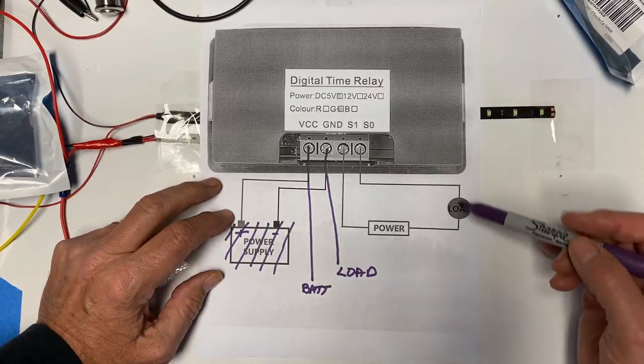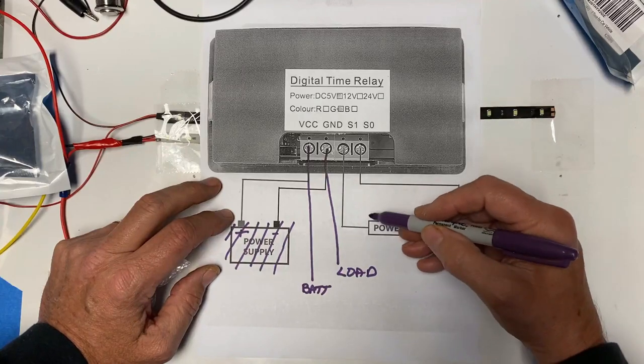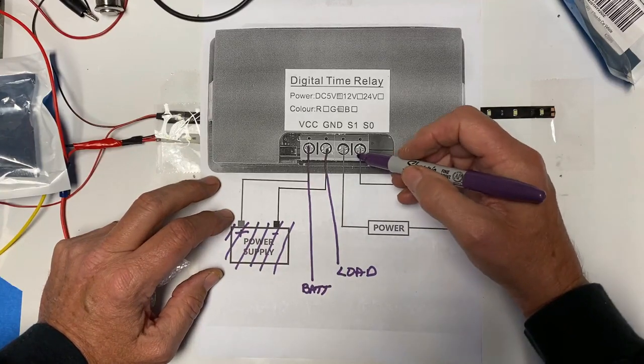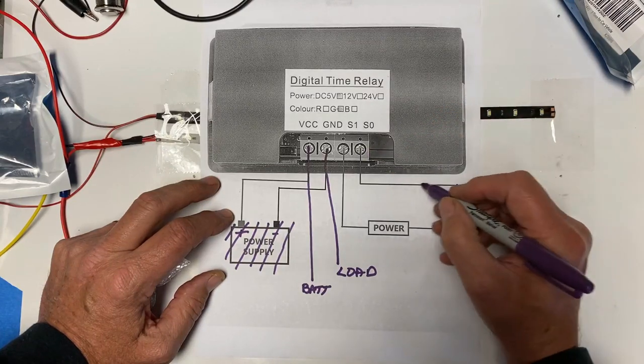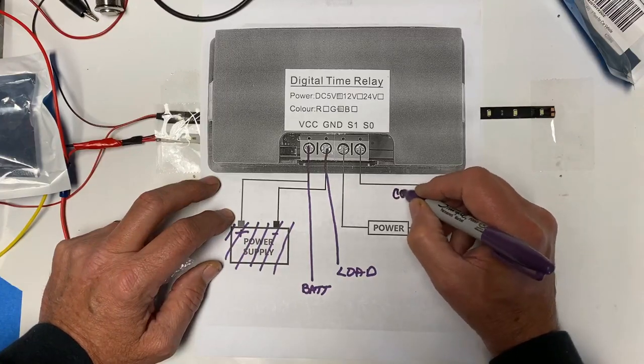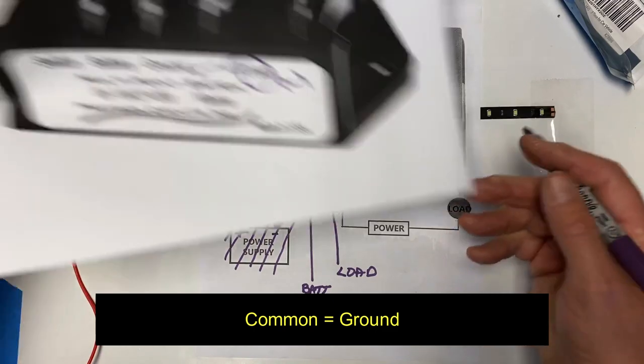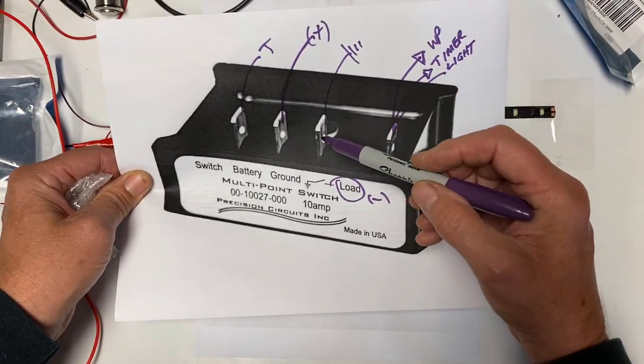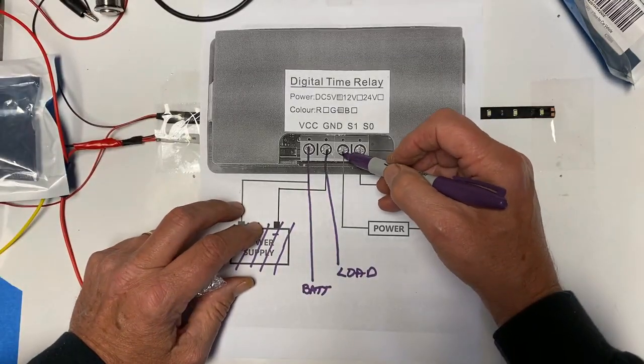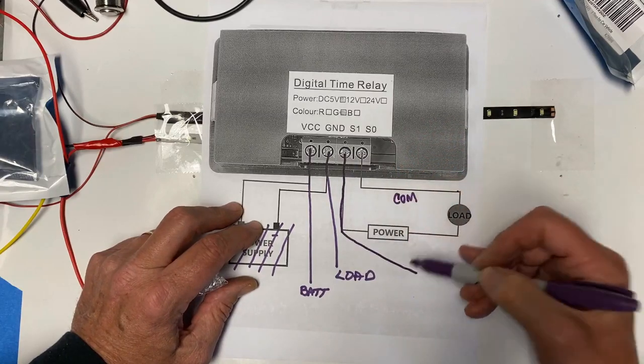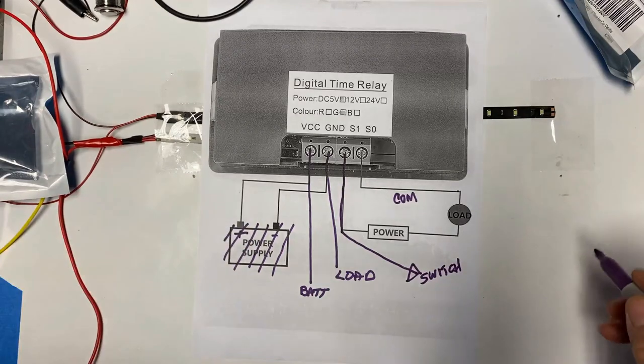If you look at this diagram here, this is the relay portion. We are going to, to the S0 portion, connect it to common. On the module, we're going to connect the S0 portion to ground. And the S1 portion, we're going to connect to switch.